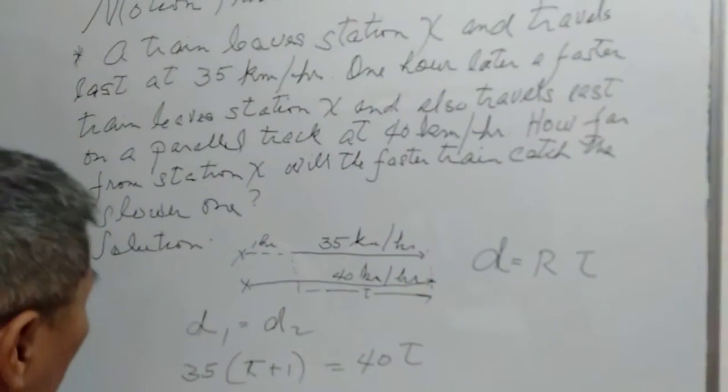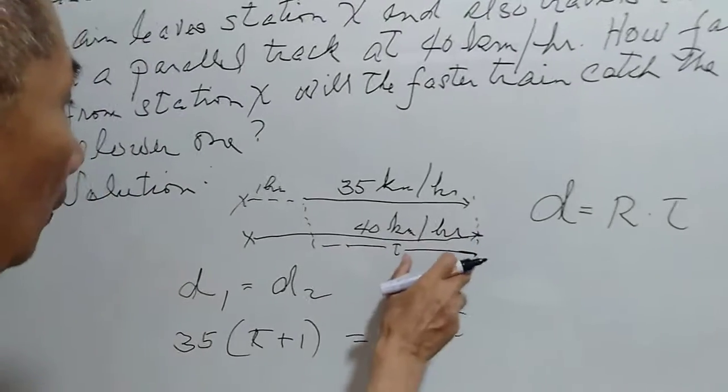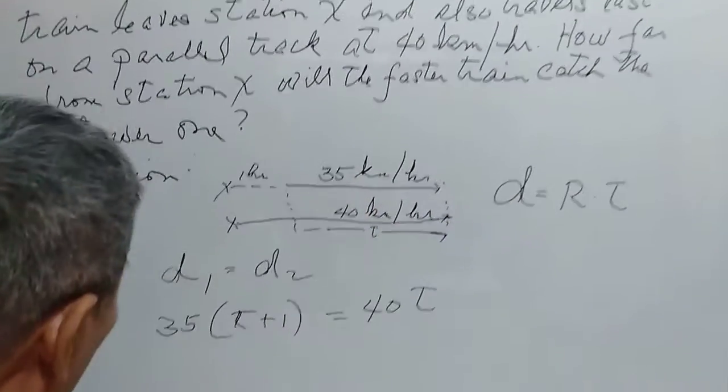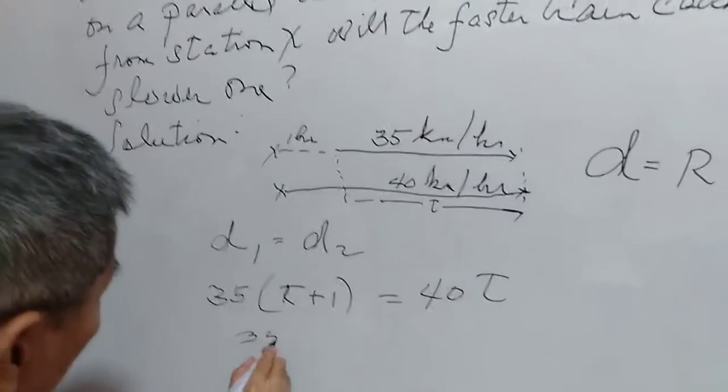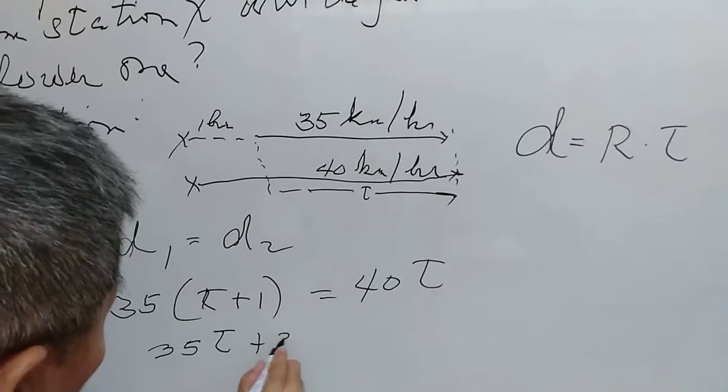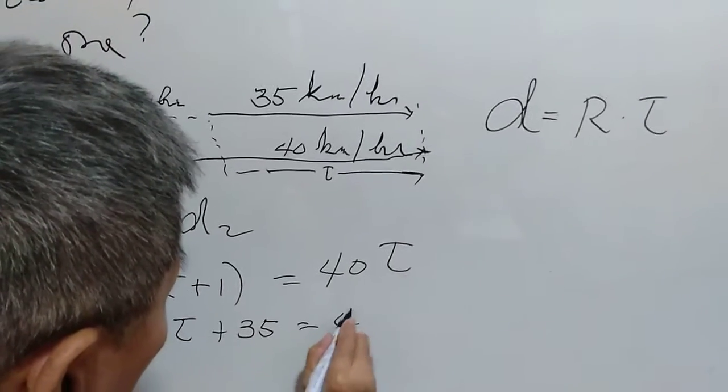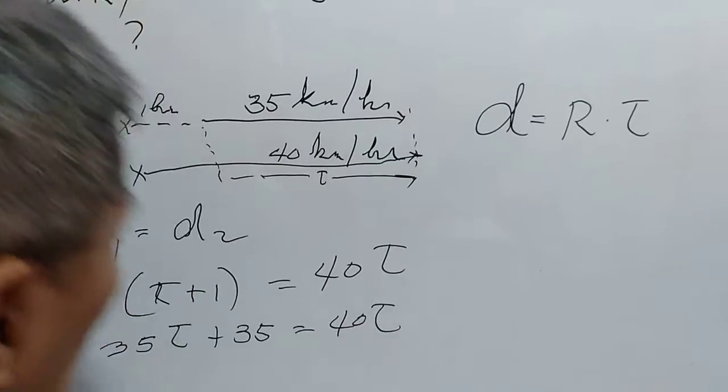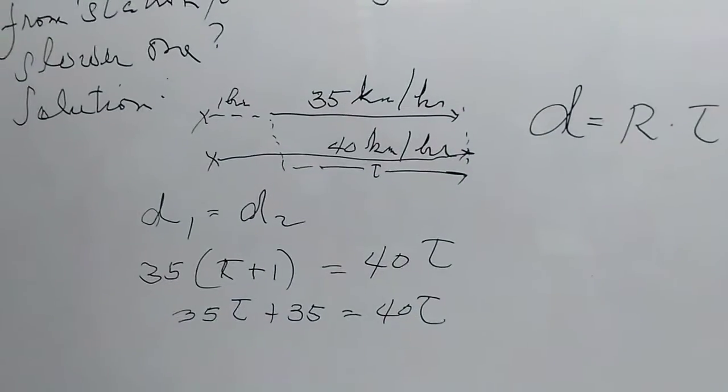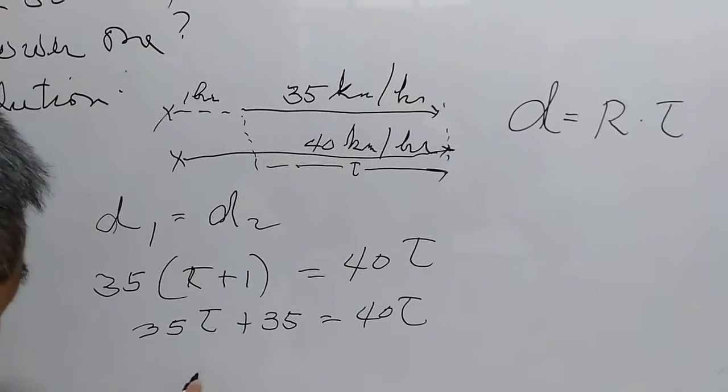Now we are asked to find the distance traveled by the faster train. So if we get 35 times T plus 1, that's 35T plus 35 is equal to 40T.